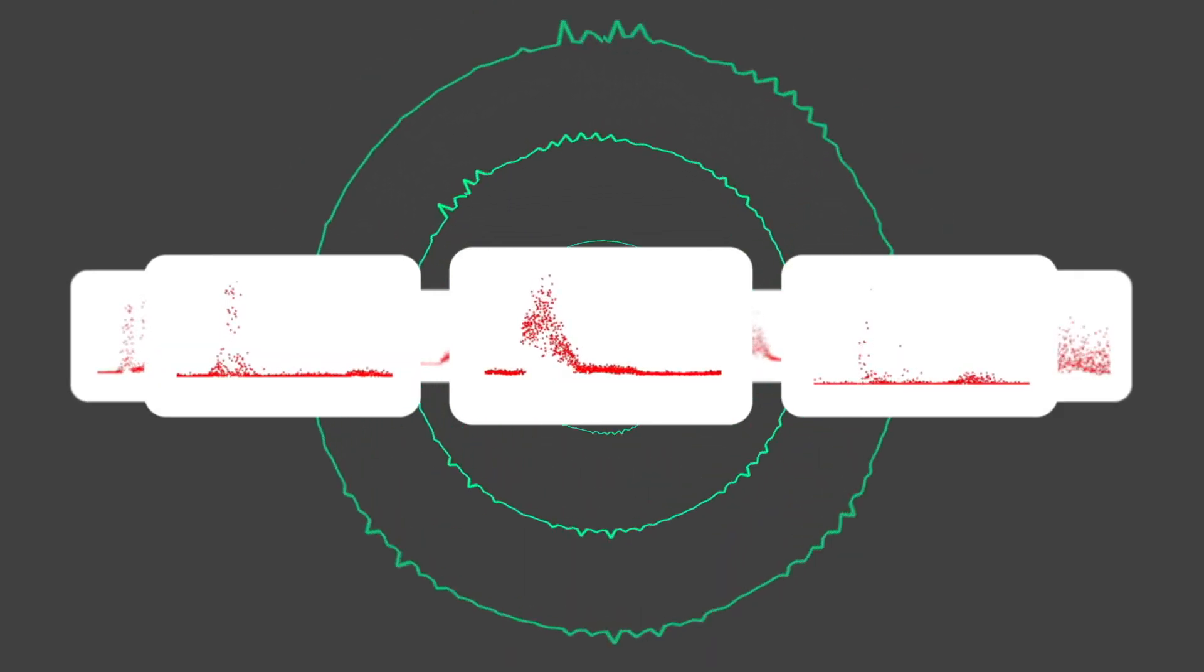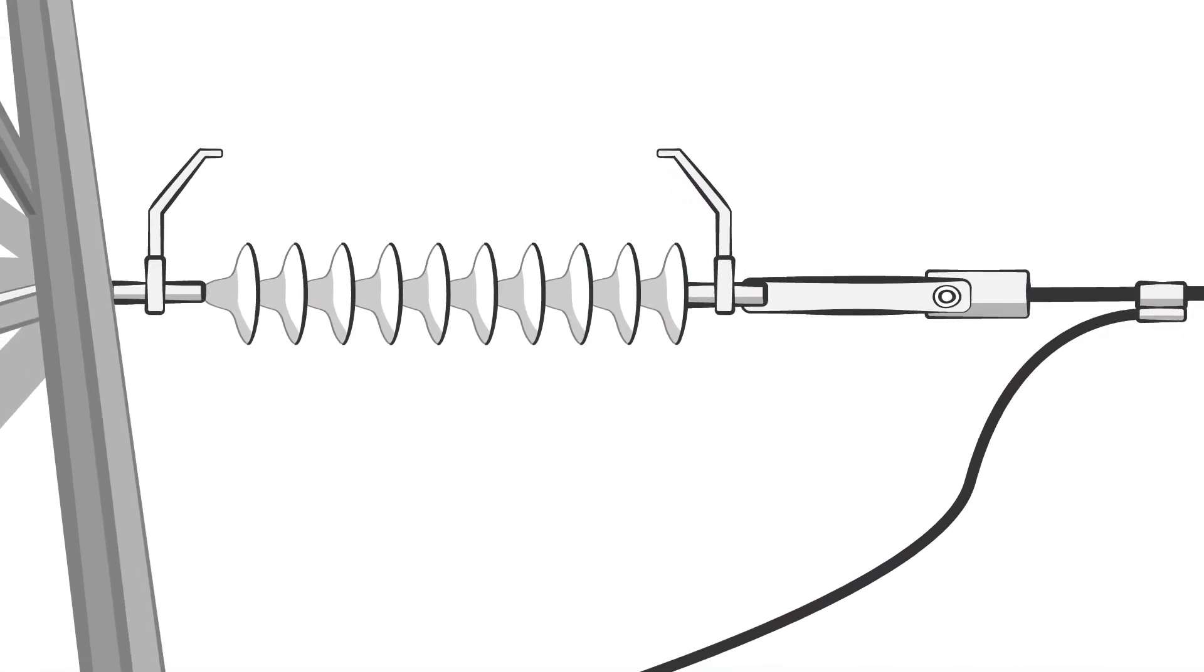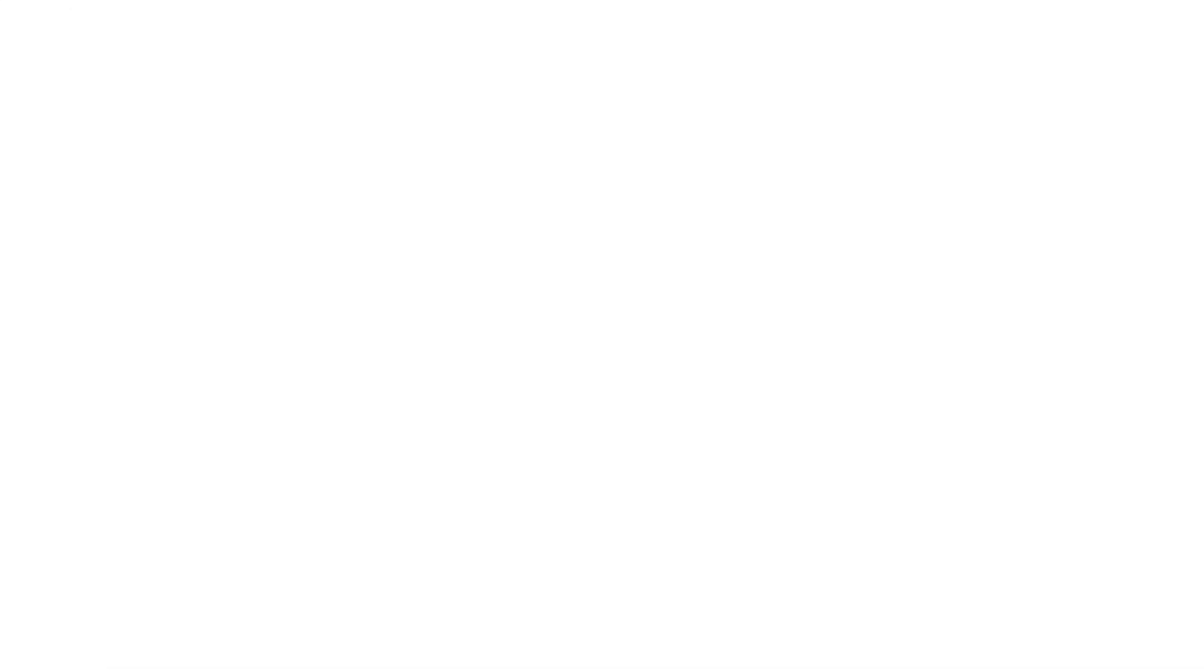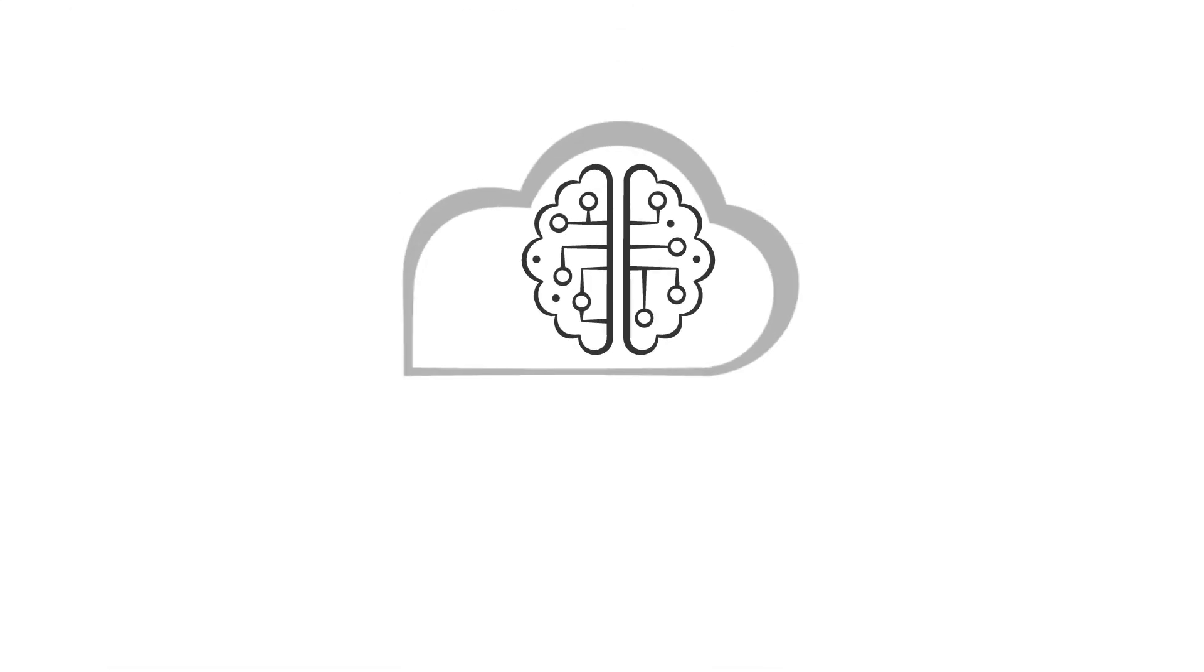Another common discharge type is the corona discharge. This discharge typically occurs around sharp corners or discontinuities on the surface of an object. Corona discharges are usually not problematic, but they may damage nearby materials or insulators. The included cloud service will automatically give you more information about the type of discharge detected.